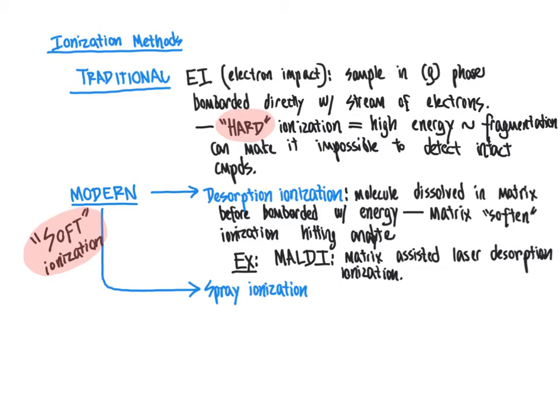MALDI is one example of a desorption ionization technique; there are several others, but they all involve dissolving the compound in some sort of matrix to soften the energy hitting the analyte. Another example of a modern soft ionization technique is spray ionization, where the sample is solubilized in a volatile solvent such as methanol, water, or some other common organic solvent, and ionized via a soft method.